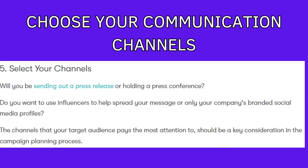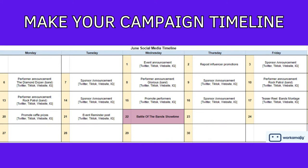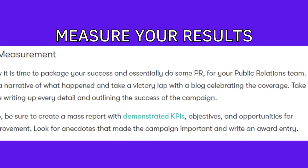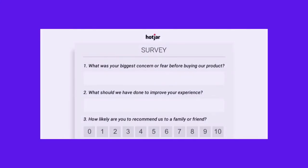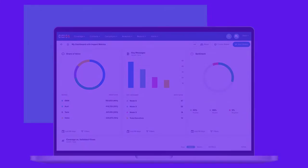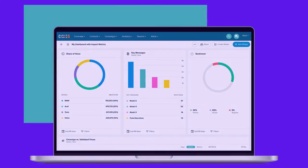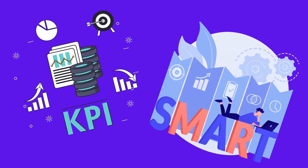Choose your communication channels — what methods will you use to deliver your message to your audience? This can include press releases, social media, events, advertising, or other tools. Make your timeline: plan it with key milestones and dates, deciding when and in what order you will do the various activities of your campaign. Measure your success — are your activities reaching your audience and achieving your goals? You can use surveys, social media analytics, sales numbers, or media coverage to measure this. You can also refer back to your KPIs and your SMART goals.